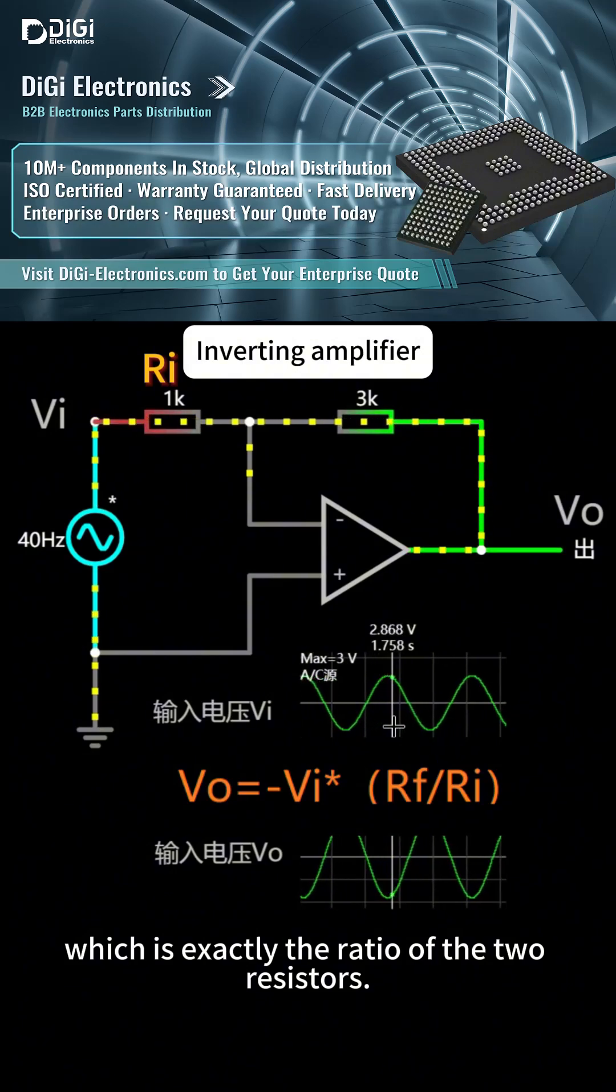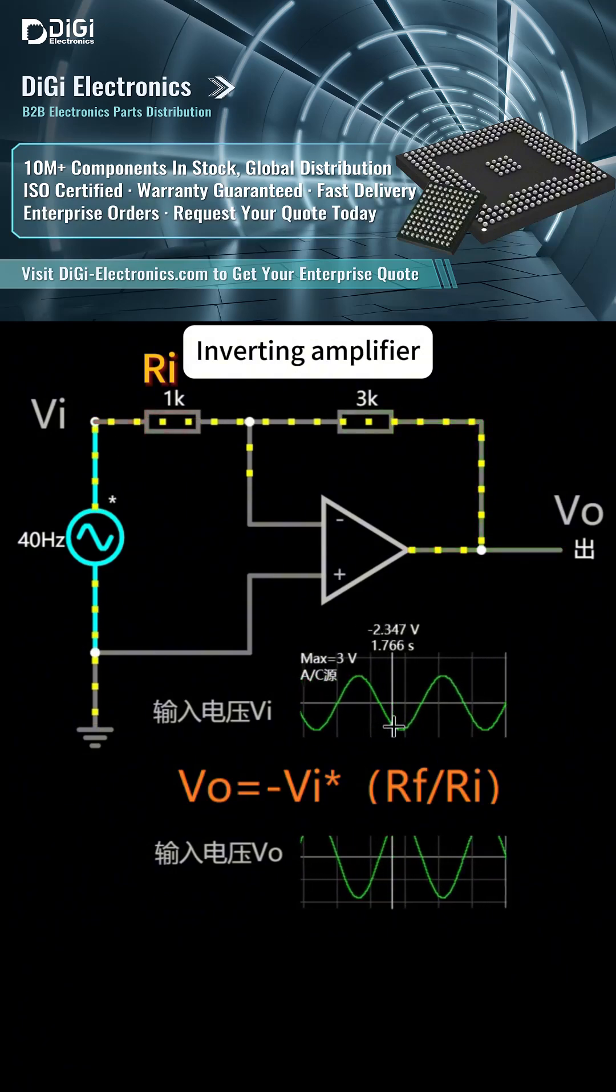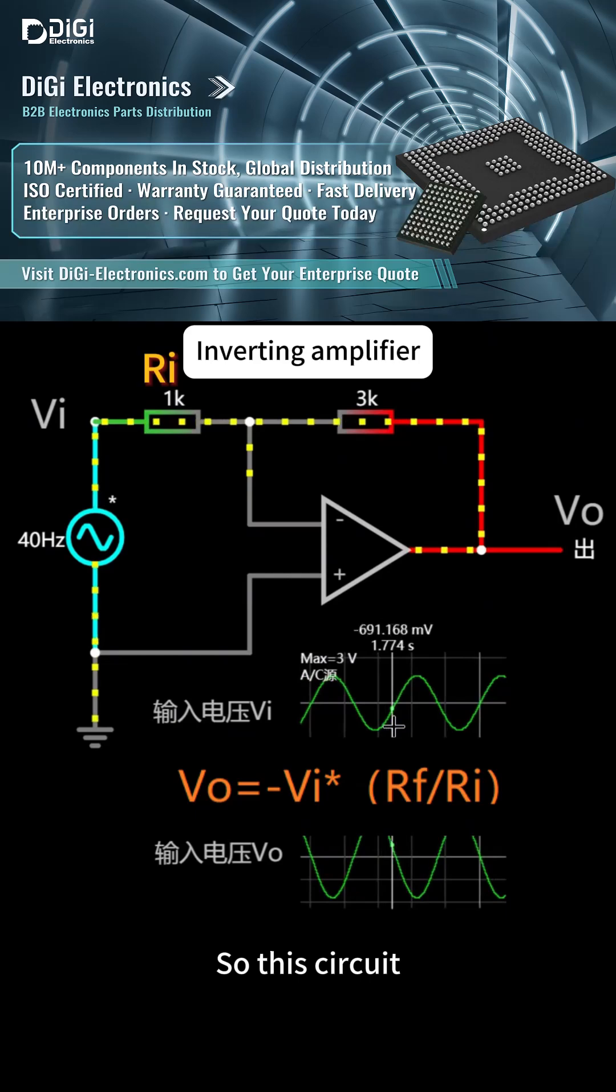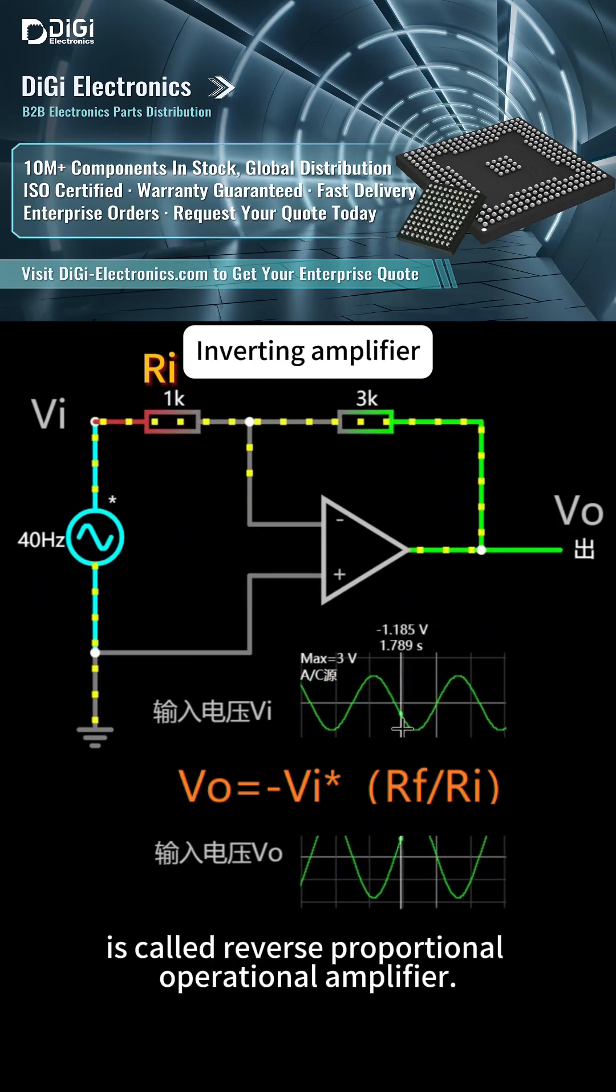which is exactly the ratio of the two resistors. So this circuit is called a reverse proportional operational amplifier.